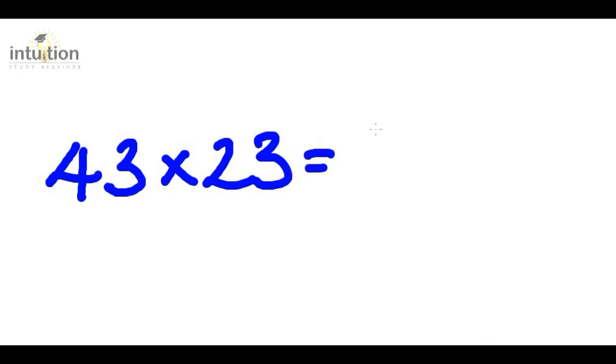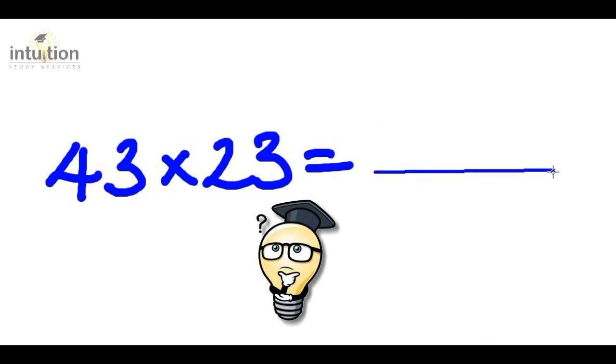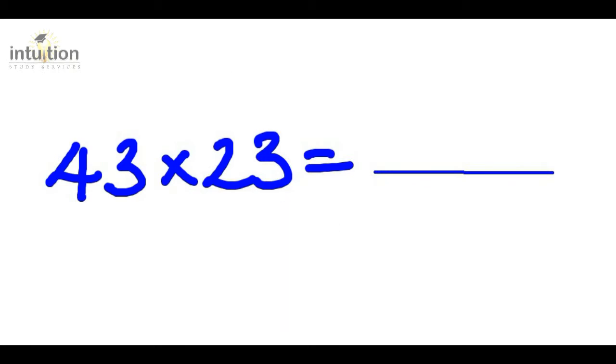Okay, so let's take a look at another example. Let's consider 43 times 23. Let's see how quickly you can do that. Give it a go. Okay, time's up. If you got 989, well done. But if not, don't worry.